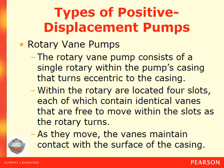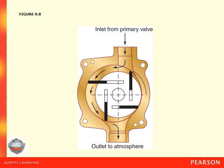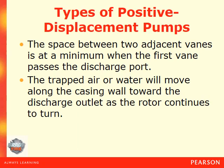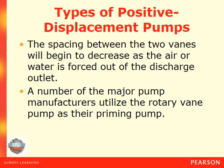Rotary vane pumps consist of a single rotor within the pump casing that turns eccentric to the casing. The rotor has four slots, each containing identical vanes that are free to move within the slots as the rotor turns. As they move, the vane maintains contact with the surface of the casing — it comes in, spins around, and is forced out of the pump. The space between two adjacent vanes is at a minimum when the first vane passes the discharge port. The trapped air or water moves along the casing wall toward the discharge outlet as the rotor continues to turn, and the space between the vanes decreases as the air or water is forced out. A number of major pump manufacturers utilize the rotary vane pump as their priming pump.